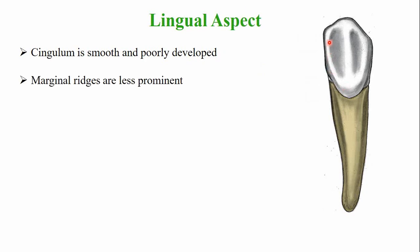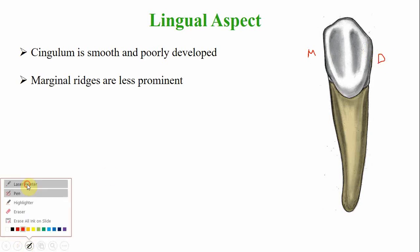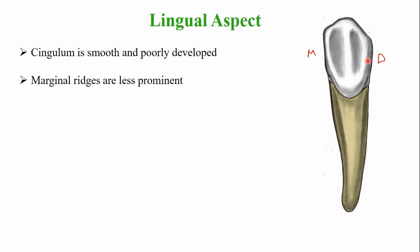The mesial and distal marginal ridges are present but less developed compared to those of the maxillary canine. The lingual ridge, which divides the lingual fossa into two, is also less developed. Overall, the lingual surface of the mandibular canine is smoother and less well-developed compared to the maxillary canine.